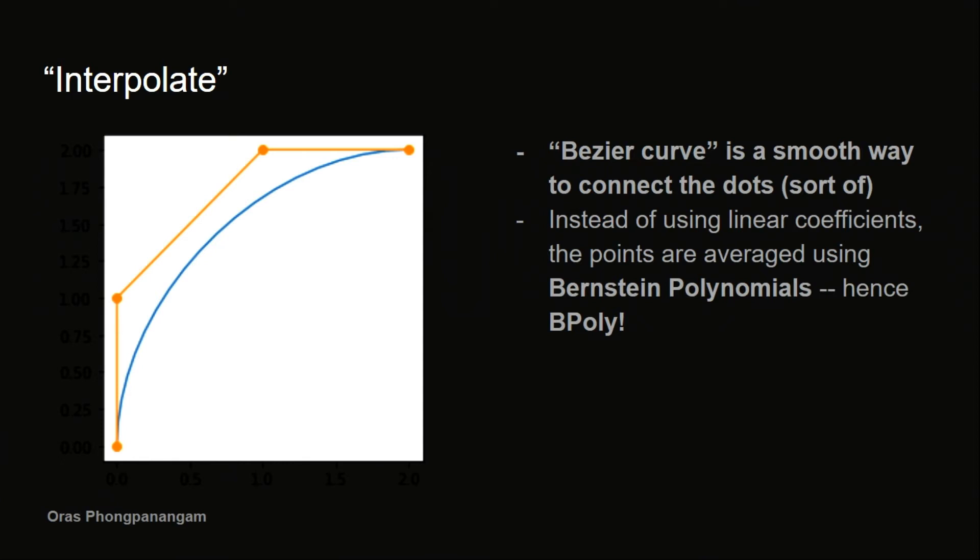And so Bezier is actually a way to interpolate the control points. By using techniques that interpolate them, we kind of glide across the points smoothly. And then we start with the first point, we end with the last point, and the other control points kind of control where the curves will end up in. And instead of using linear coefficients for the points, we instead use a basis called Bernstein polynomials, which is where the name Bpoly comes from.